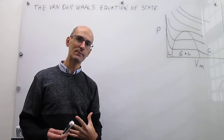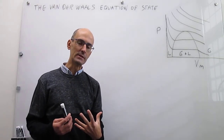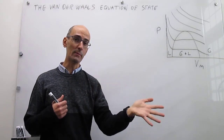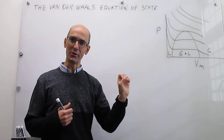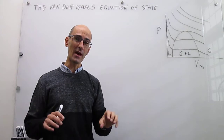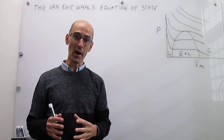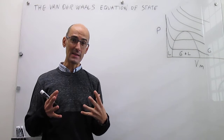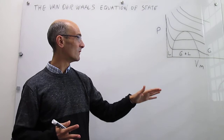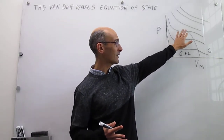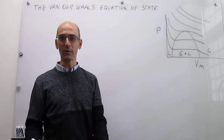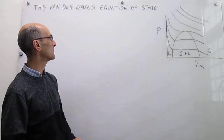We're going to examine that critical point, because it turns out that the critical point variables — the critical pressure, critical temperature, and critical molar volume — are connected to the A and B parameters of the Van der Waals Equation of State. That is fascinating because you can connect experimentally measurable critical values of a gas with the theoretical parameters.